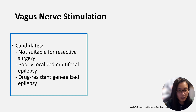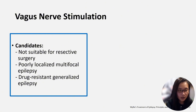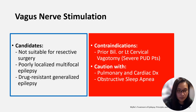Selection of potential candidates is important. Epilepsy patients with drug-resistant epilepsy who are not suitable for resective surgery are the target candidates. Use of VNS therapy is contraindicated in patients with prior bilateral or left cervical vagotomy.